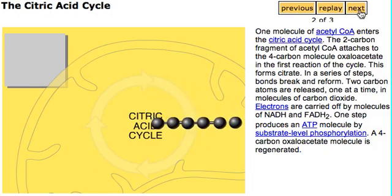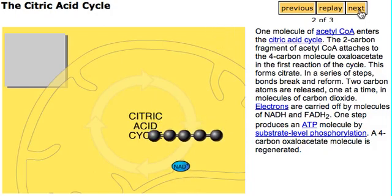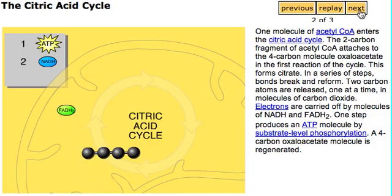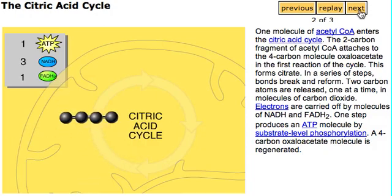Two carbon atoms are released one at a time in molecules of carbon dioxide. Electrons are carried off by molecules of NADH and FADH2. One step produces an ATP molecule by substrate-level phosphorylation. A 4-carbon oxaloacetate molecule is regenerated.